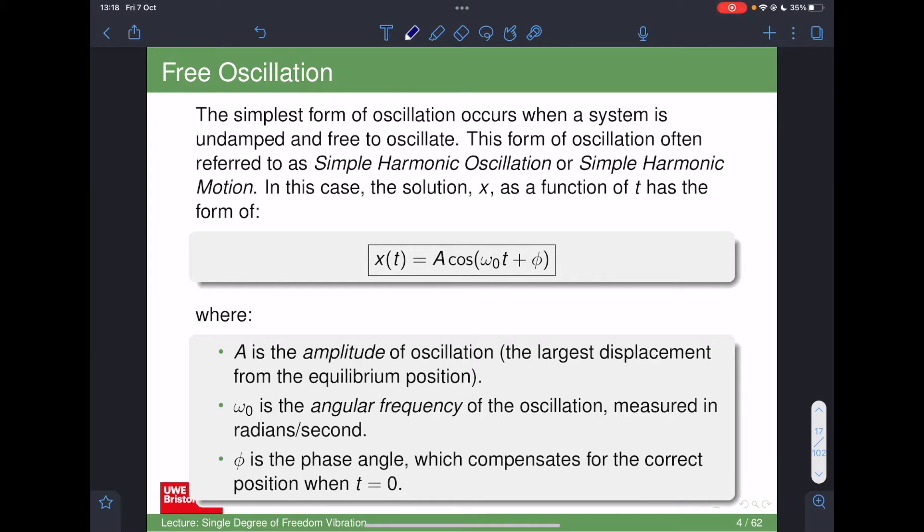This angle at the end, I've used the Greek letter phi. It could be another Greek letter. In fact, when we're dealing with damped systems, I use alpha, but it doesn't really matter. It's a phase angle, and that can shift the thing left and right such that when t equals zero, you might not be at the top of the amplitude, you might be in the middle. In this case, phi is going to have a value. You can shift the thing left and right by different amounts by changing phi. It compensates for the correct position when t is zero.